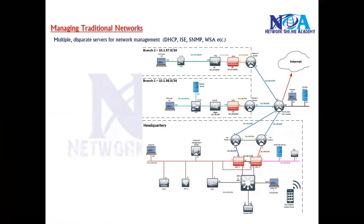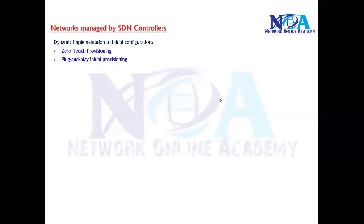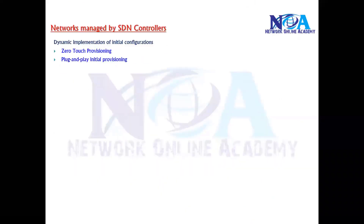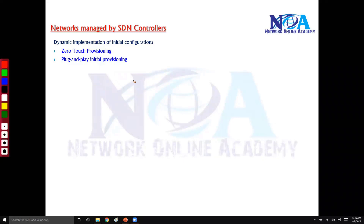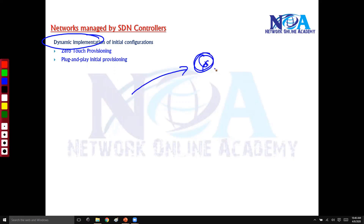These are some of the limitations we can see with traditional networks. Now when comparing traditional networks with SDN controllers, what are the benefits and what will differ? With the help of SDN controllers, I can do something called dynamic implementation of initial configurations.